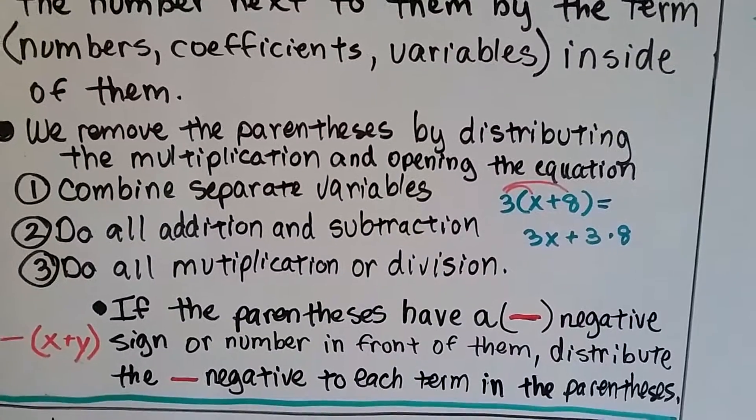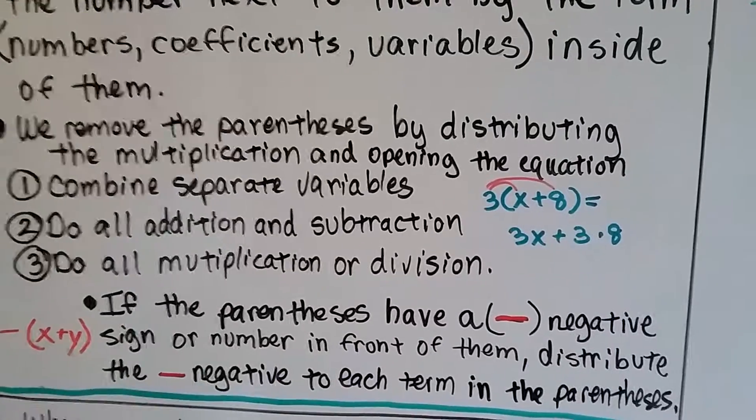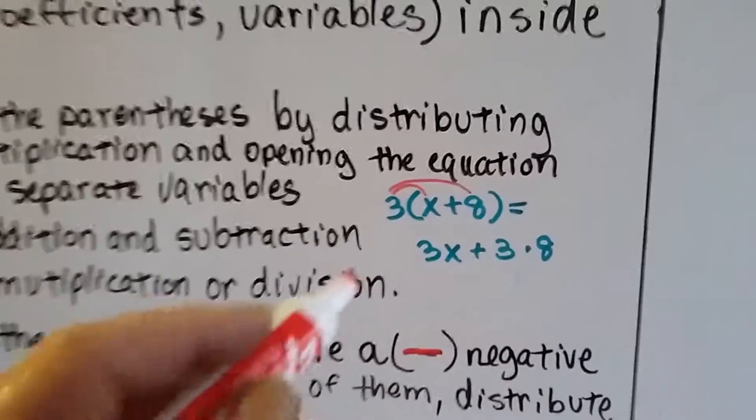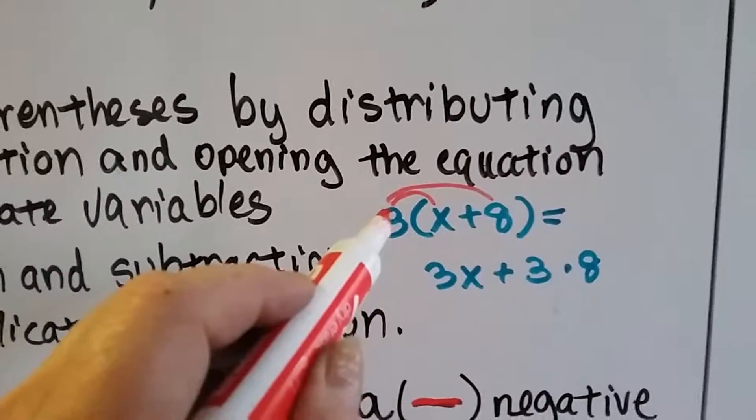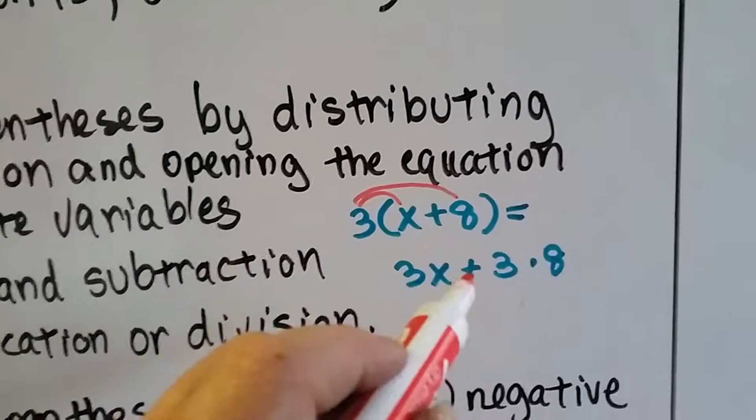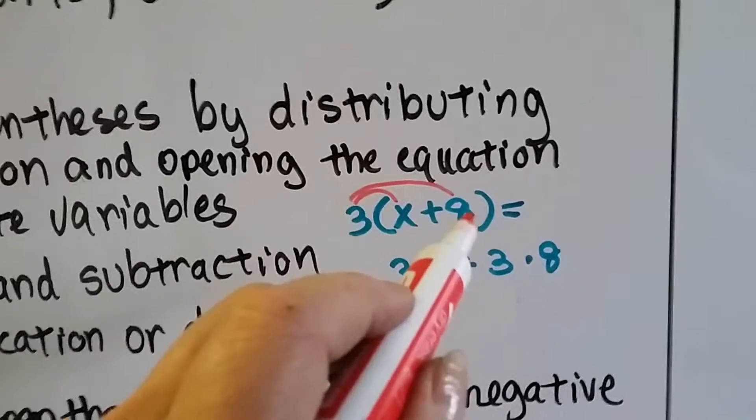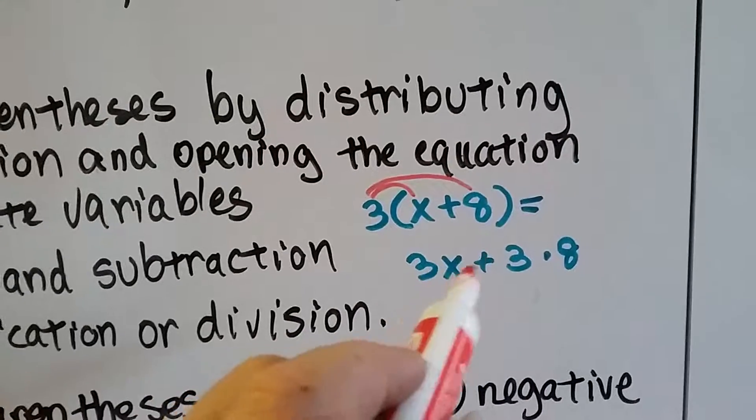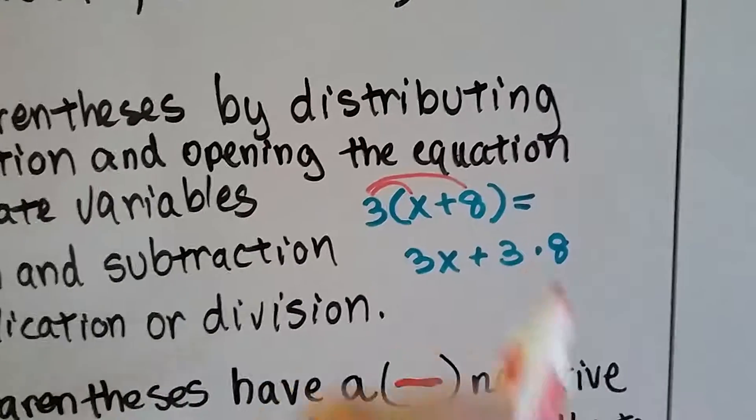We remove the parentheses by distributing the multiplication and opening the equation up. So, we would have 3 on the outside of the parentheses. That means 3 times x, plus, we drop our plus sign, 3 times 8. So, we'd end up with 3x plus 24 because 3 times 8 is 24.